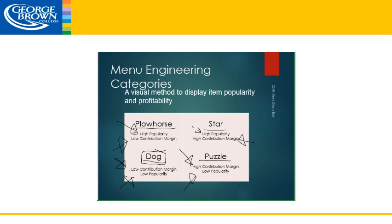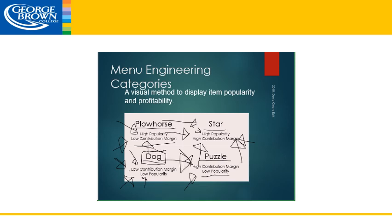Now what do we do with this information after classifying each menu item? Secretly every item is trying to become a star. For instance, a plow horse has a low contribution margin, and if we could increase that to above the average it would become a star. On the other hand, if we have a puzzle and wanted it to become a star, we would have to increase its popularity. As for dogs, unless you could drastically increase the contribution or the popularity to turn this into either a plow horse or a puzzle, it's okay to get rid of these items off your menu.